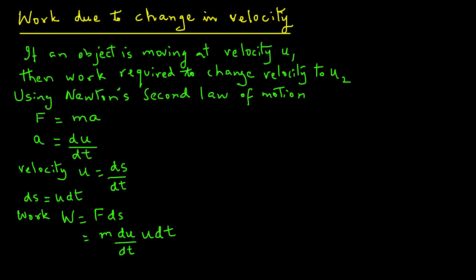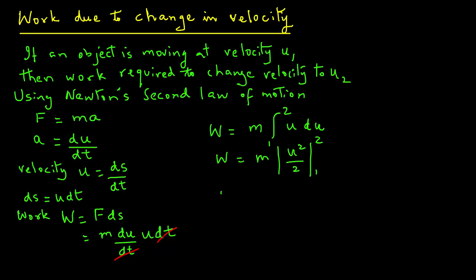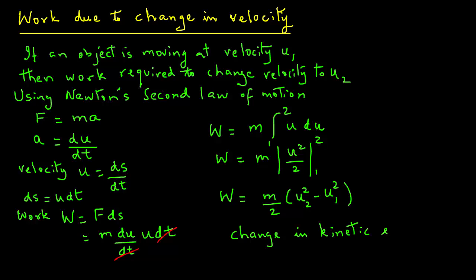The dt terms cancel out, giving work equals m times the integral from 1 to 2 of u du. Since the integral of u du equals u squared over 2, we get W equals m/2 times (u2 squared minus u1 squared). The right-hand side expresses the change in kinetic energy of the system.